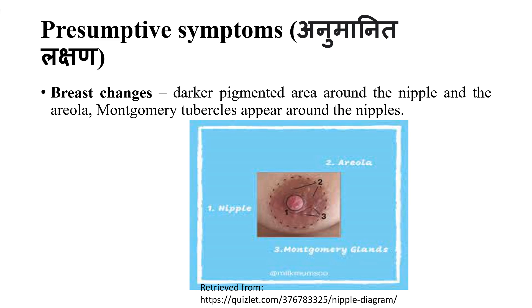There are also breast changes as presumptive symptoms. Changes occur in the nipple and areola. The areola becomes darker due to increased pigmentation.